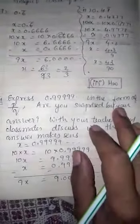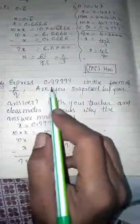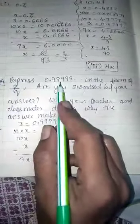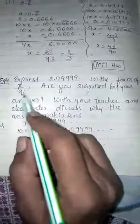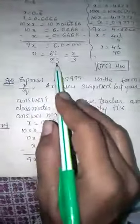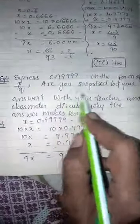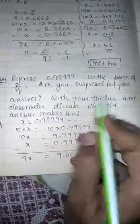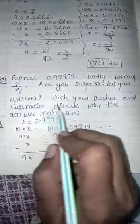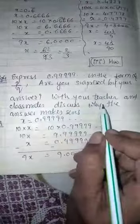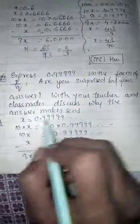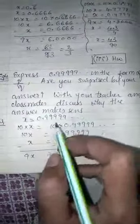Similarly, you can do sum number 3 as homework. Example number 4: express 0.9999... in the form of P upon Q. You can do this the same way. Are you surprised by your answer? Discuss with your teacher and classmates why the answer makes sense.